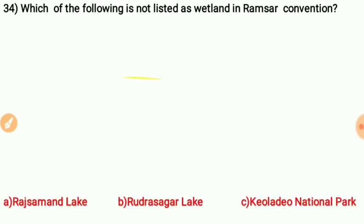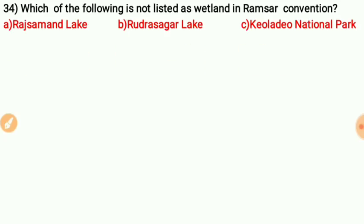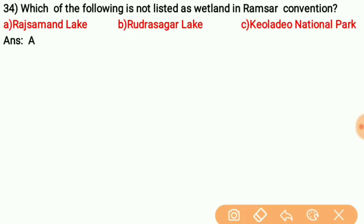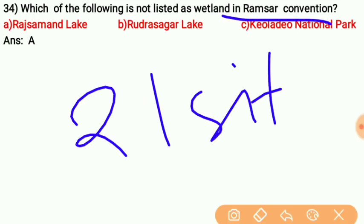Question thirty-three: Which of the following is NOT listed as a wetland in the Ramsar Convention? The answer is A — Rajsamand Lake. Rajsamand Lake is not listed under the Ramsar Convention. The Ramsar Convention has 21 listed wetland sites.